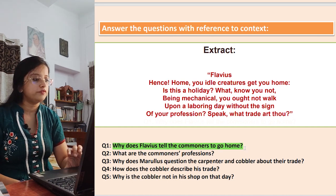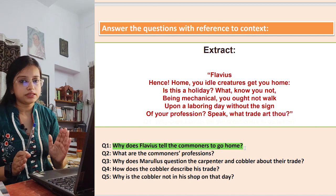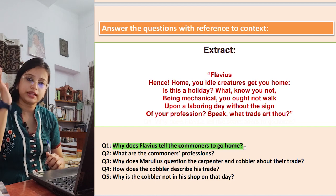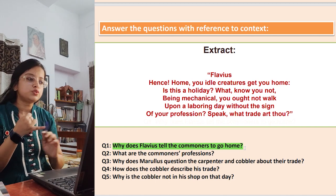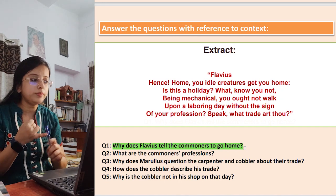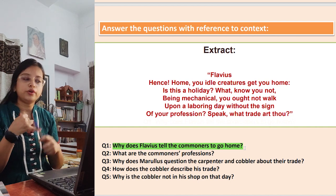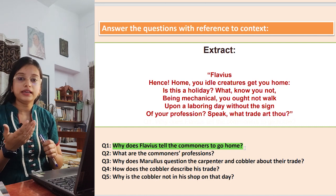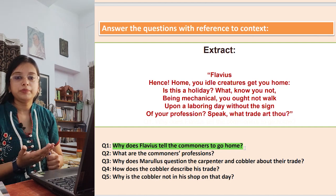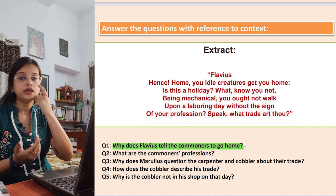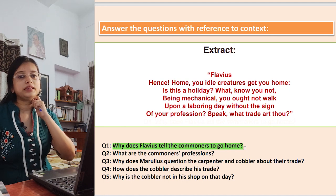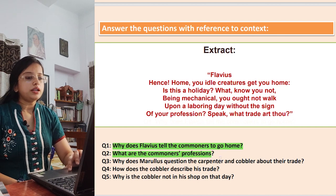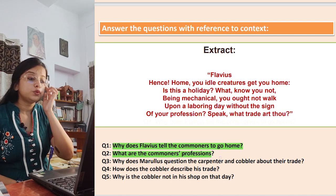Long Answer Q1: Why does Flavius tell the commoners to go home? Flavius tells the commoners to go home because they should not be walking around on a laboring day without the sign of their profession. He also disliked seeing people rejoicing Caesar's victory when just months before they were celebrating Pompey. Long Answer Q2: What are the commoners' professions? One was a carpenter and another was a cobbler.